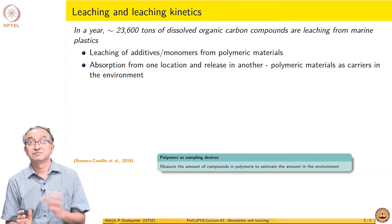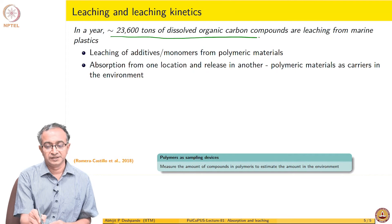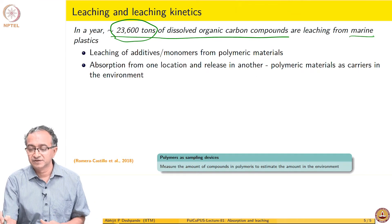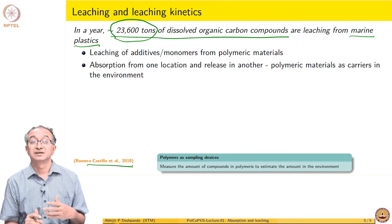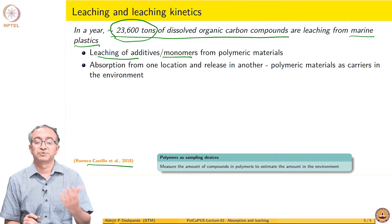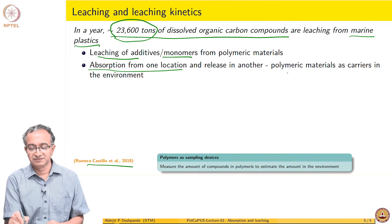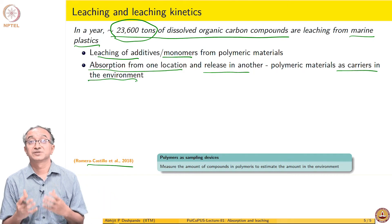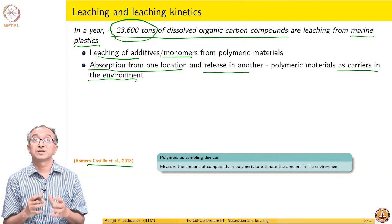With this, let us look at leaching, which is the reverse process where solutes get exchanged out. One of the reasons leaching is very important from an environmental impact point of view is the large number of dissolved organic compounds present in polymers and the amounts being leached from plastics in the marine environment. There is a huge impact in terms of not just the number of these compounds but also the amounts. Leaching of additives and monomers from polymeric materials to the surrounding is an important point to remember. We can also have absorption from one location and then leaching or release in another — polymeric materials can act as transporters of cargo, where the cargo is small molecules, and their impact is felt in many more ways than just what they contain themselves.